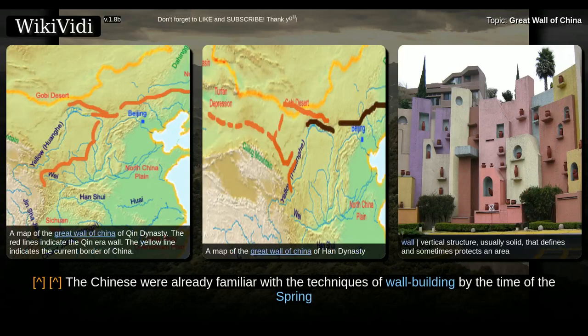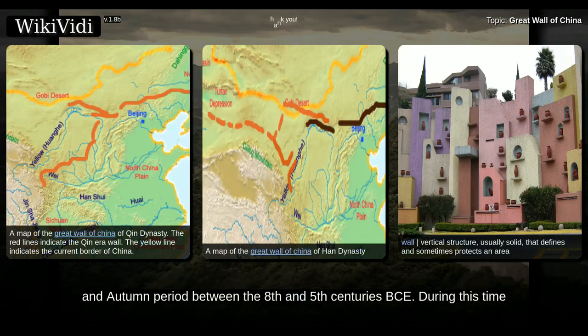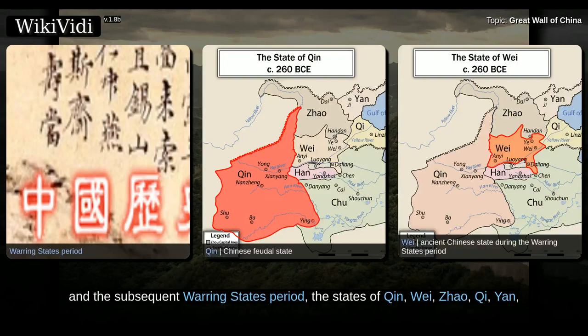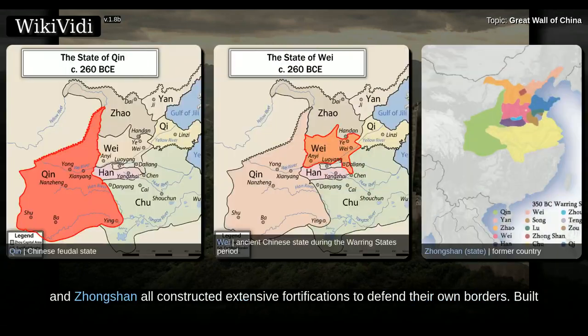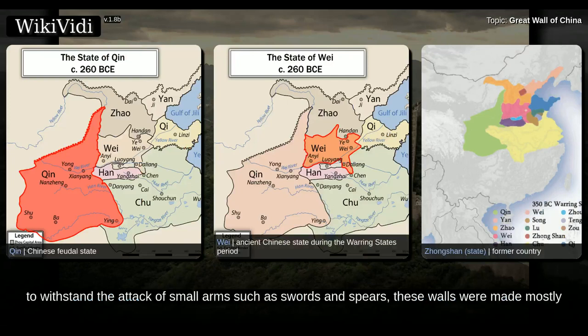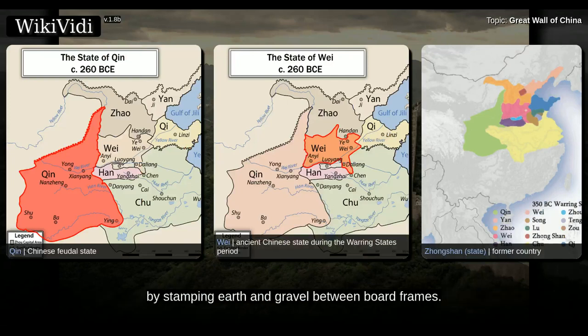The Chinese were already familiar with the techniques of wall building by the time of the Spring and Autumn period between the 8th and 5th centuries BCE. During this time and the subsequent Warring States period, the states of Qin, Wei, Zhao, Qi, Zhang, and Zhongshan all constructed extensive fortifications to defend their own borders. Built to withstand the attack of small arms such as swords and spears, these walls were made mostly by stamping earth and gravel between board frames.